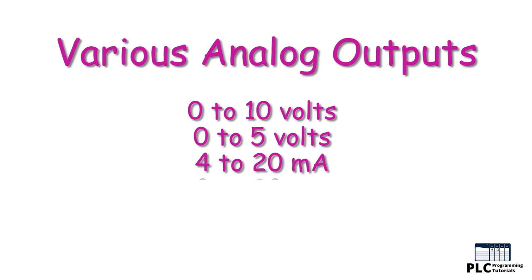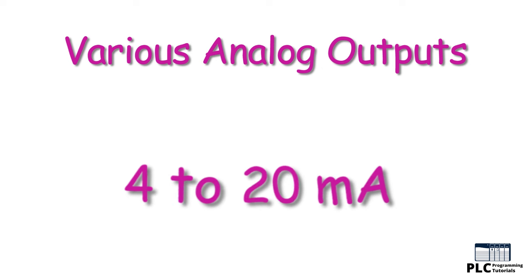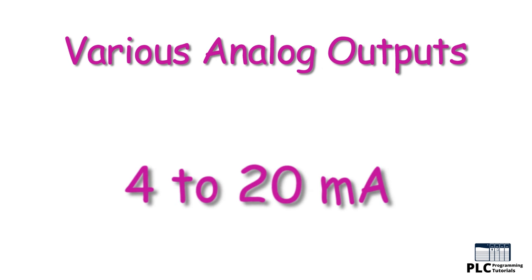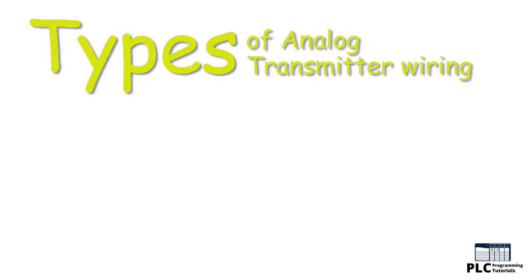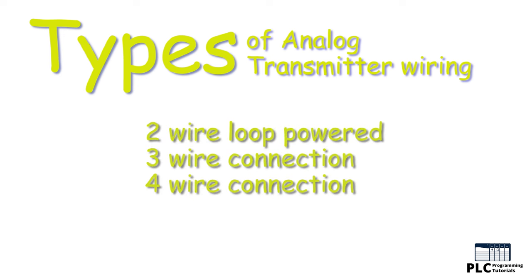Transmitters are available with a wide variety of signal outputs. The 4 to 20 milliamp analog signal is by far the most commonly used in industrial applications. Several physical 4 to 20 milliamp wiring options exist, and in this video we will outline these options.